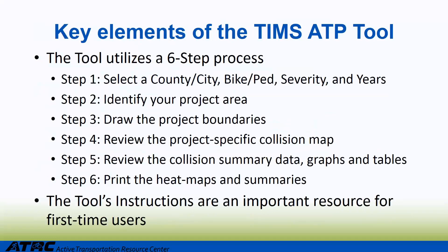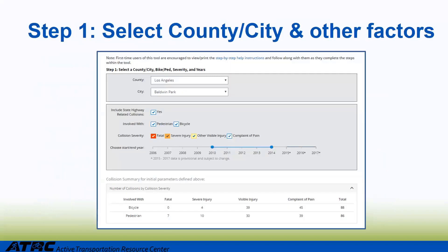The key elements of the tool we are going to be talking about today are the six primary steps that the tool goes through and the tool's instructions. In step one, a user selects the county and the city that the project is in, and then the crash factors and the time factors they want to utilize. In this particular example shown in this FLASH training, we are using a project that was funded in Cycle 3. As shown here, all the different factors are checked, so even though this project is not on a state highway system, it's okay to check it because we just won't be utilizing that data.